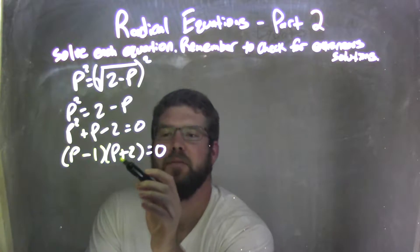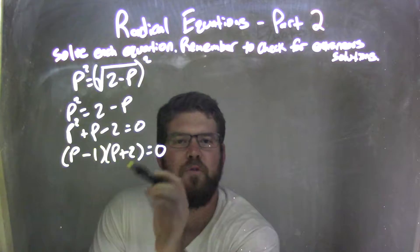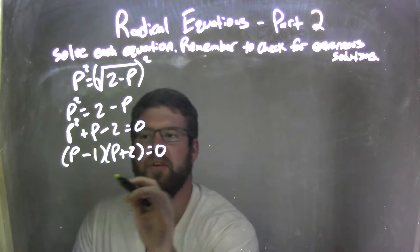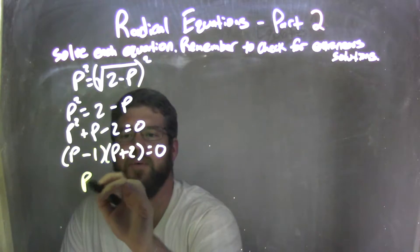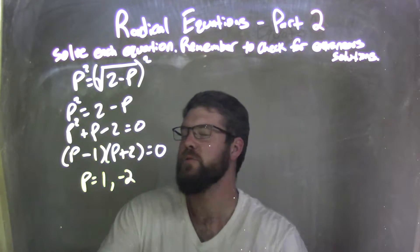So if p minus 1 times p plus 2 equals 0, so now that this is factored, I can set each part equal to 0. So my solutions here are p equals a positive 1 and a negative 2. Those are my two solutions.